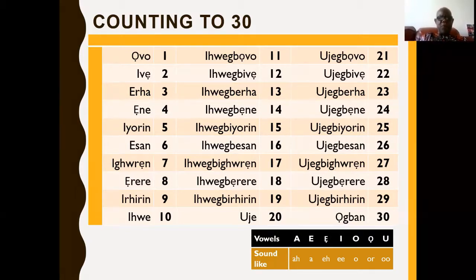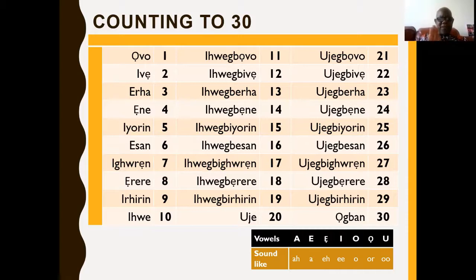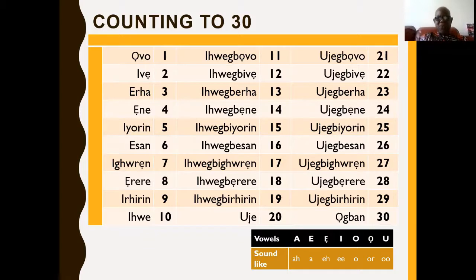Iwe gbovo — that's two added to the base. Iwe gbive, Iwe gberra, Iwe gbenne, Iwe gbiyunni, Iwe gbesa, Iwe gbibwne, Iwe gbelele, Iwe gbivrili.